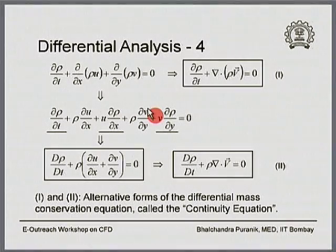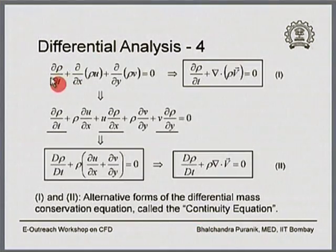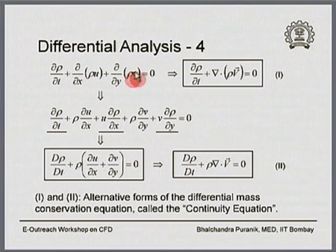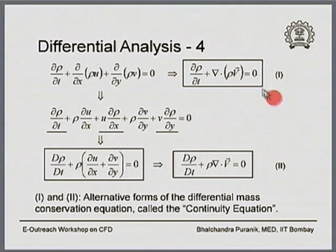There is an alternative vector form of this equation. The Cartesian equation can be written as the partial derivative of rho with respect to time plus the divergence of the quantity rho times the velocity vector, equal to zero. This is the general vector form — Equation 1.